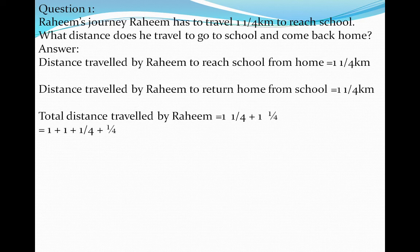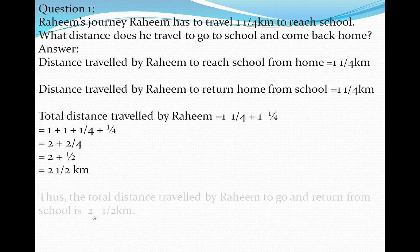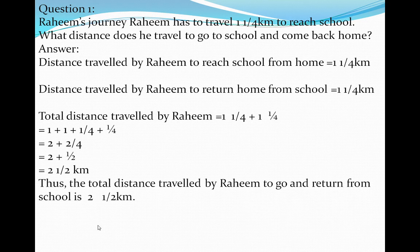So the addition — how we can do addition? Look at here: 1 plus 1 and the fractions are 1/4 plus 1/4. So 1 plus 1 becomes 2 and 1/4 plus 1/4 becomes 2/4. Now here we have to find out the shortest form of 2/4. That is, 2 ones are 2 and 2 twos are 4, so instead of 2/4 we can write one-half. So the total distance travelled by Rahim is 2 and a half km.